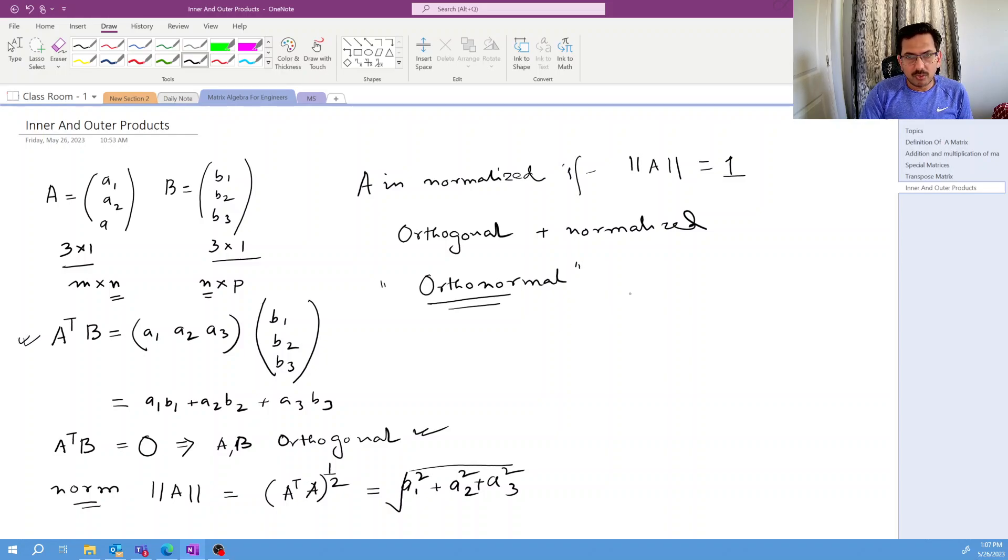Now we will talk about the outer product. When we are talking about the outer product, in this case B is my outer vector kind of things. So let us talk about outer product, and in later classes we will discuss more on this. So when you are talking about the outer product, in this case, basically, A and B transpose.